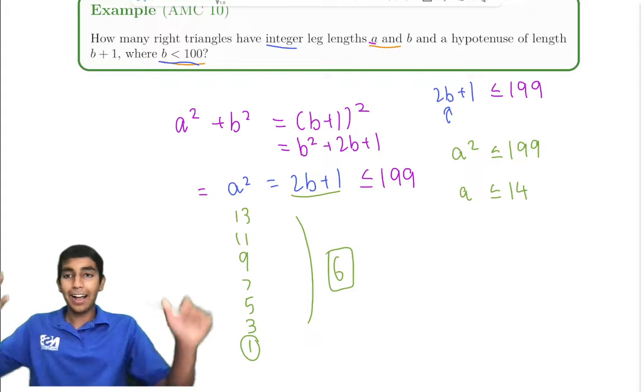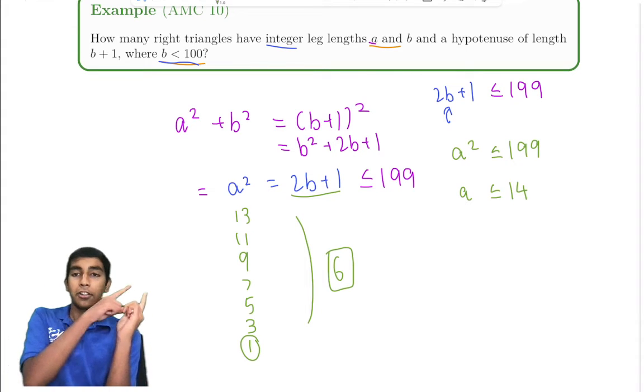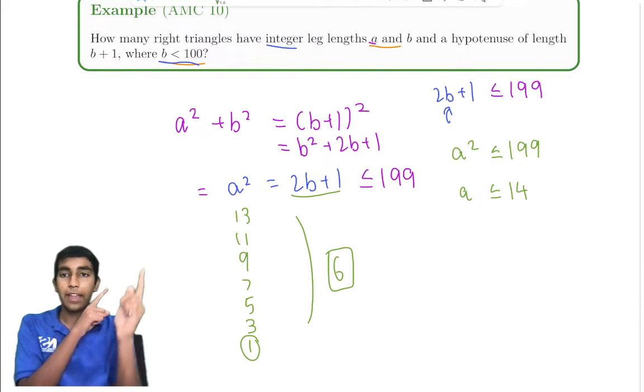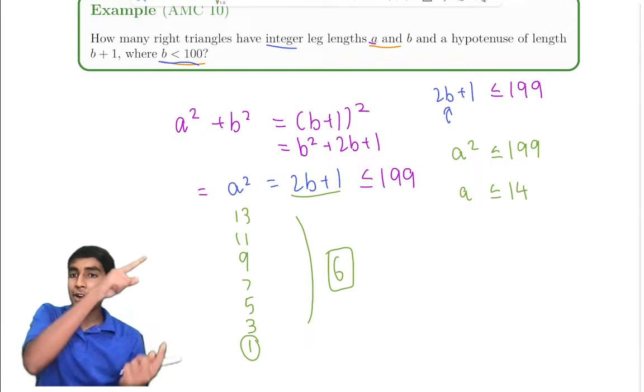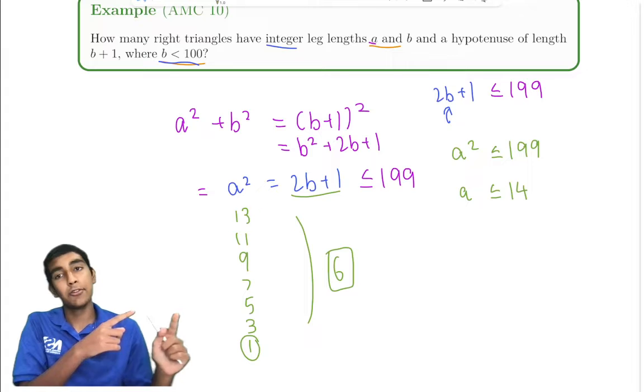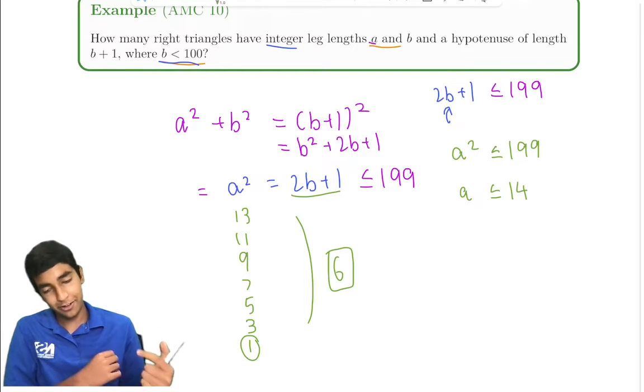So 6, right there, our answer to this problem. Summarized, we used the Pythagorean theorem, we looked at our integer condition, and then we narrowed down the possibilities. And this represents what a Diophantine equation truly is.